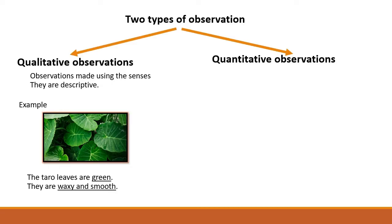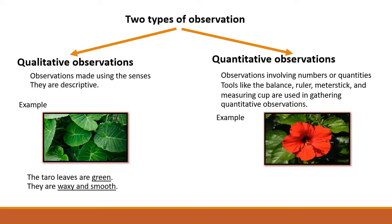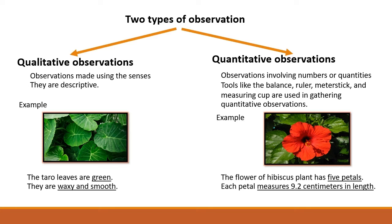Let's move to quantitative observations. When we say quantitative observations, it involves numbers or quantities. Tools like the balance, ruler, meter stick, and measuring cup are used in gathering quantitative observations. For example, look at the picture — this is a hibiscus or gumamela plant. The flower of the hibiscus plant has five petals. Each petal measures 9.2 centimeters in length. The underlined words — five petals, measures, 9.2 centimeters in length — involve numbers and quantities. When you use quantitative observation, remember that you must use numbers and quantities.